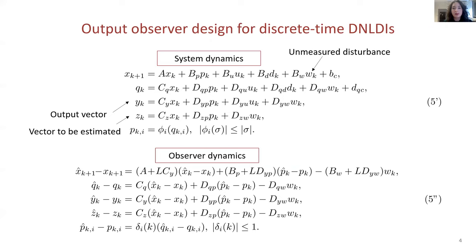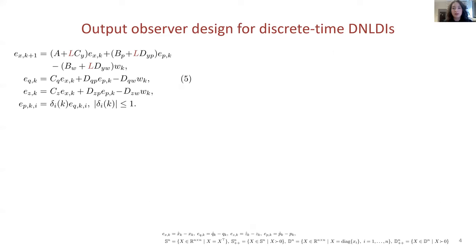Now, consider a system of similar structure with an additional unmeasured disturbance w. The corresponding observer dynamics for an observer matrix L are given by 5 double prime. Subtracting those two equations gives the observer error dynamics 5.